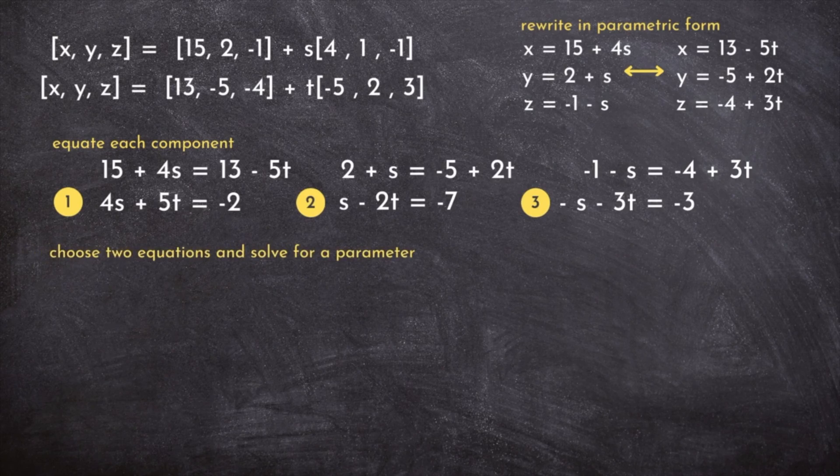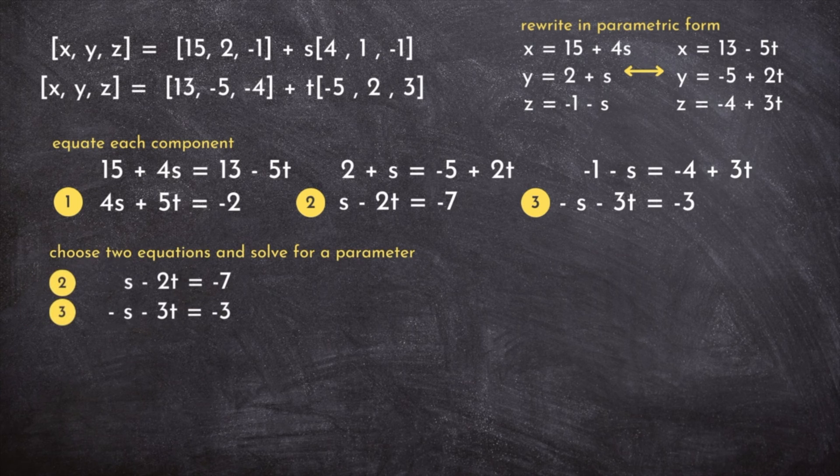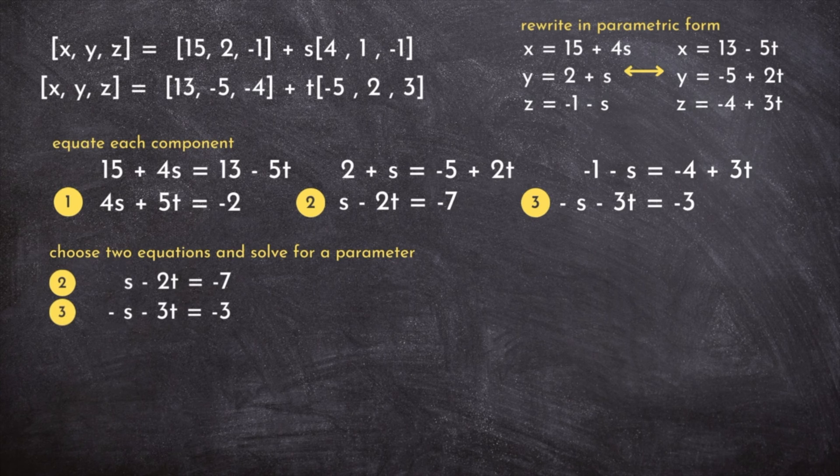Remember, our goal is to find values for s and t that make x, y, and z equal. I'm going to choose two equations at random, say equations 2 and 3, and form a linear system of two equations and two unknowns.